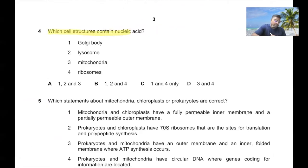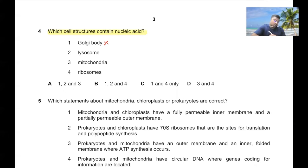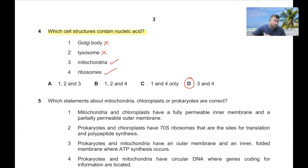Question 4: Which cell structure contains nucleic acid? Golgi body does not contain nucleic acid — it just modifies and packages protein. Lysosome also does not contain nucleic acid. But mitochondria and ribosome both contain nucleic acid. So option D is the correct answer.